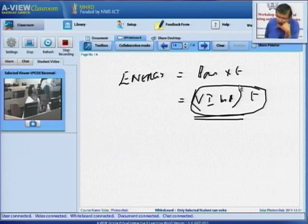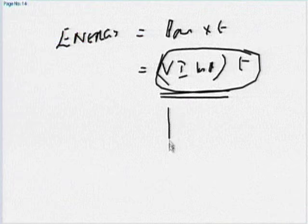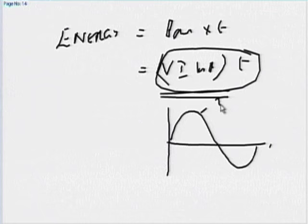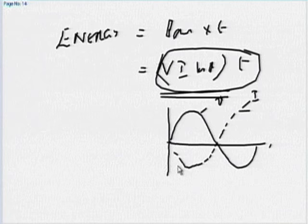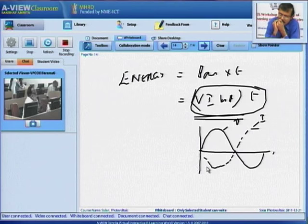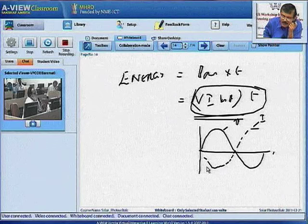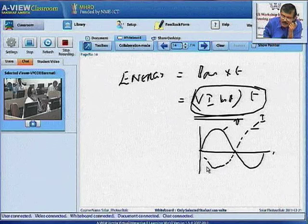A student mentions that sometimes the current appears negative in the power meter — meaning out of phase with the voltage wave, indicating reverse power flow where the load side is generating and feeding power back. The lecturer confirms this is feeding power to the grid at unity power factor, but questions how this is possible in a typical home, concluding the session.